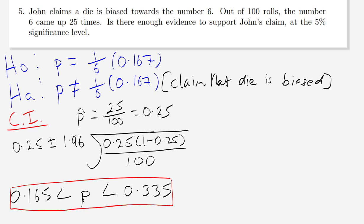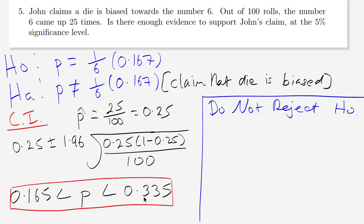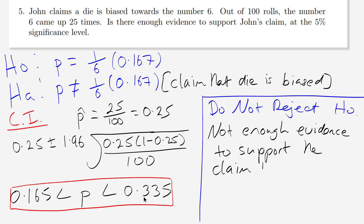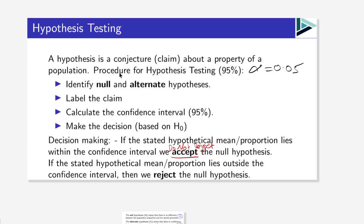We test the null hypothesis — the proportion equals 0.167. Does 0.167 lie within the range 0.165 to 0.335? Yes, it does. Therefore we do not reject the null hypothesis. There is not enough evidence to support the claim that the die is biased. This was an interesting question because the claim was not the null — it was the alternate — and we had to recognize that 1/6 was the proportion we were dealing with.